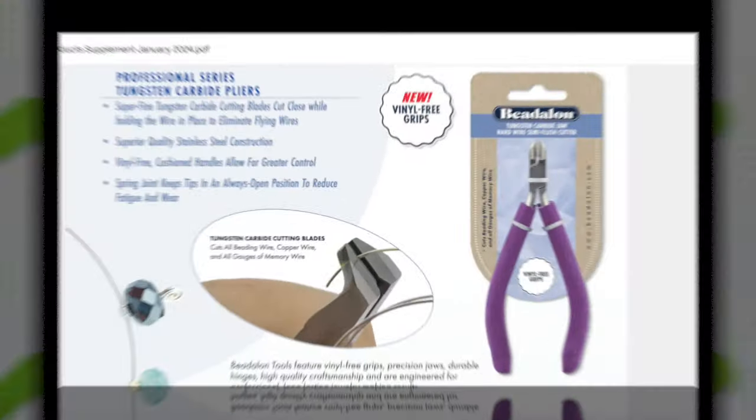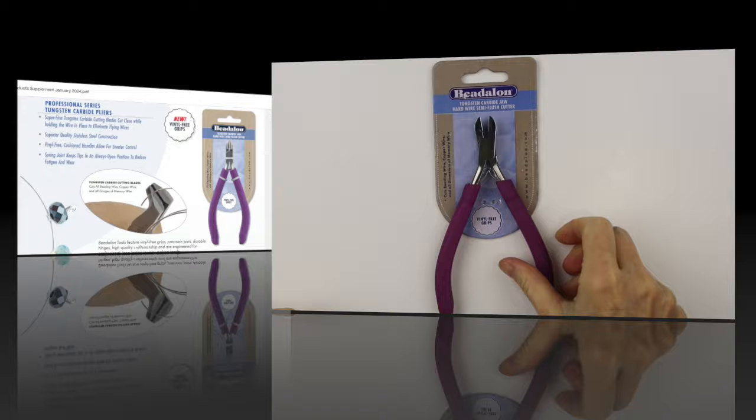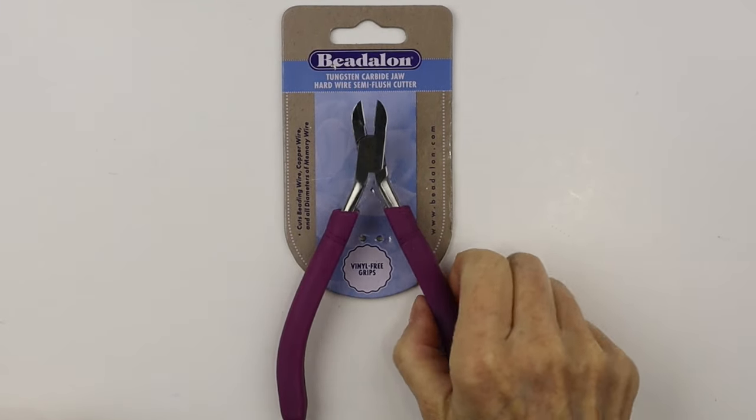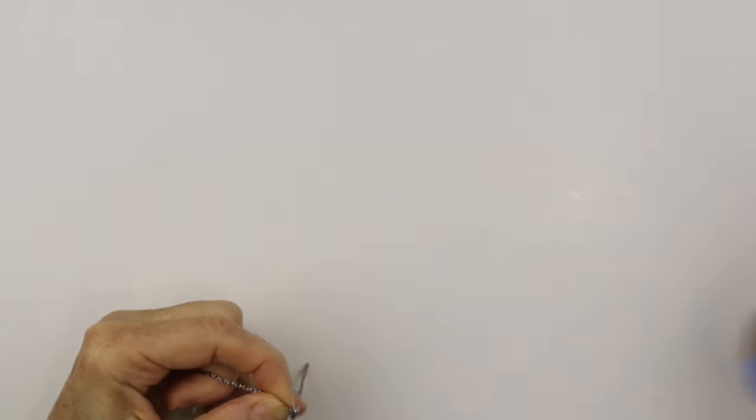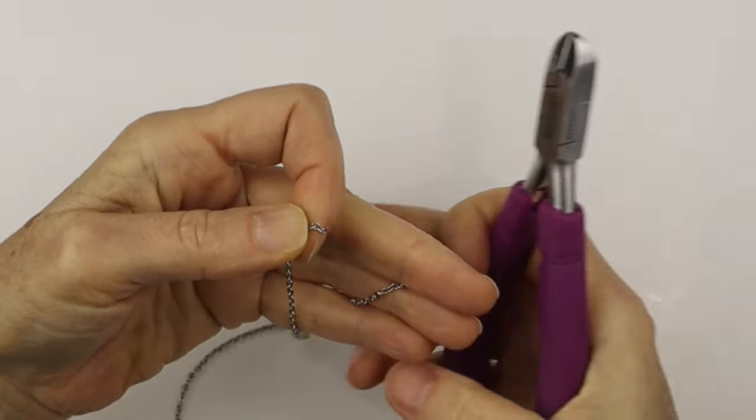And also these tungsten carbide jaw hard wire semi-flush cutters that can also be used for memory wire. I'm going to clip the stainless steel chain to about three inches. You can make these as long as you want.